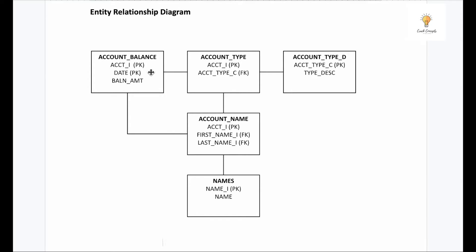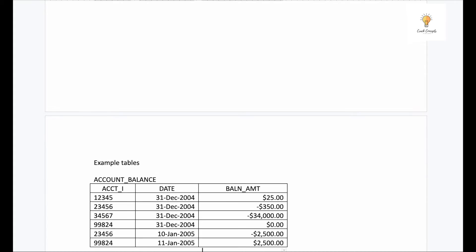If you want to see how they are connected, always remember that PK or FK will be written in brackets. PK means primary key and FK means foreign key. Between these two tables, the common column is account_id, and between these other two, account_id is common again. Between another pair, account_type_c is common, and between yet another pair, first_name_id, last_name_id, and name_id are common. Also remember that a foreign key and a primary key don't necessarily have the same names — they can have different names. Between these two, account_id is common.